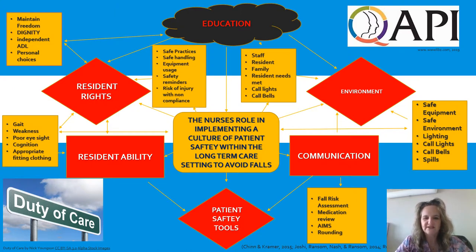A lot of this has to do with patient communication. We need to communicate with our staff through education what the resident's rights are. We need to discuss daily about their abilities, utilize new safety tools or assessments, and make sure that we're doing rounding — really monitoring, observing, and assessing our patients to make sure that they are safe. A lot of us do rounds for that whole purpose of getting enough communication and learning enough information about our patients.